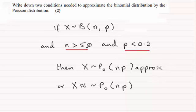Okay, but all that was needed as I say was just for you to write down n is greater than 50 and p is less than 0.2.